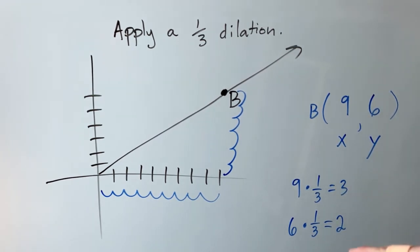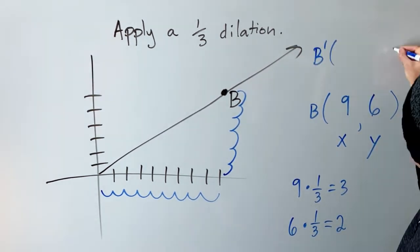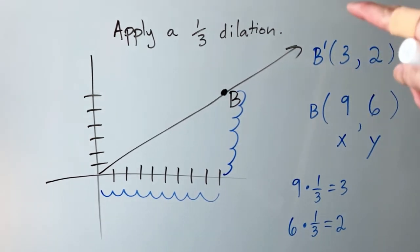So three and two are the brand new X and Y. So I wrote it down up here. So the original was B, and this one is B prime. Like Optimus Prime, the word is prime. So it's B prime, and these are the coordinates, three and two, that we got from down here.